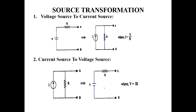For current source to voltage source conversion: the current is parallel with resistance, but we need voltage. Using V equals I times R, we calculate V. We then redraw the resistance in series with the voltage source. Keep in mind: voltage is always in series with resistance, and current is always in parallel with resistance.